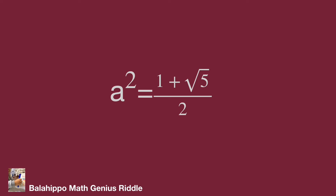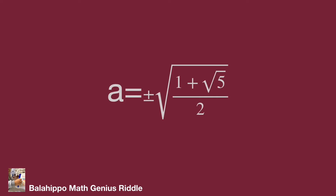Adjust the value: a squared equals 1 plus root 5, over 2. Taking the square root of both sides gives a equal to plus or minus the square root of 1 plus root 5 over 2. That's the value of a. So we got three values of a in total. Do you get the same result? Hope you enjoy the video.